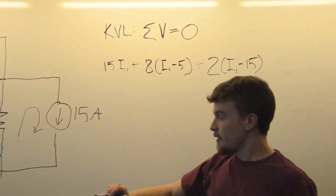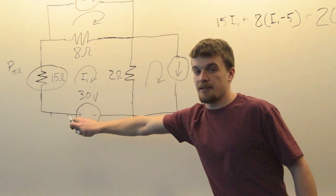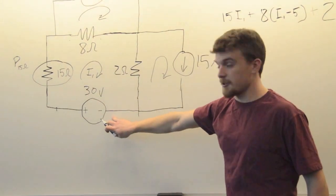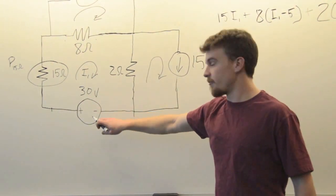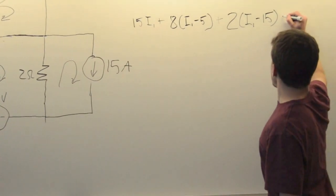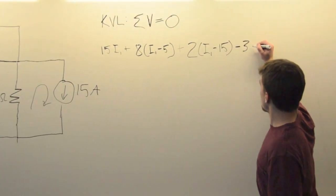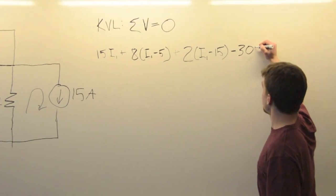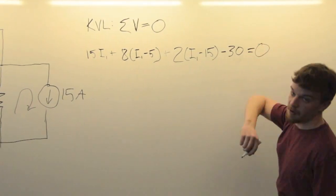And finally, the voltage drop across this is actually a voltage rise. It's going to be negative because it's a voltage rise of 30 volts. So we're going to say minus 30 is equal to zero.